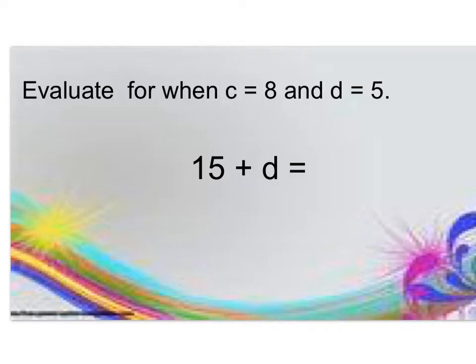Let's try again. Same idea: c is 8 and d is 5. I find my variable, which is d. The directions say that d is going to be 5, so instead of d, I'm going to substitute 5 in its place. Then I can add: 15 plus 5 is 20. That's my answer.